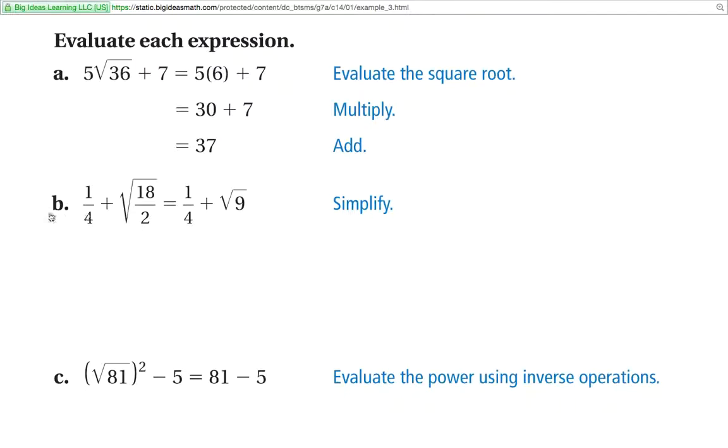This one here, do you have any parentheses? No. Any exponents? Yes. 18 over 2. You can simplify this one. This one's easier to simplify. 18 divided by 2 is 9. And the square root of 9 is 3. So it becomes 3 plus 1 fourth is 3 and 1 fourth.